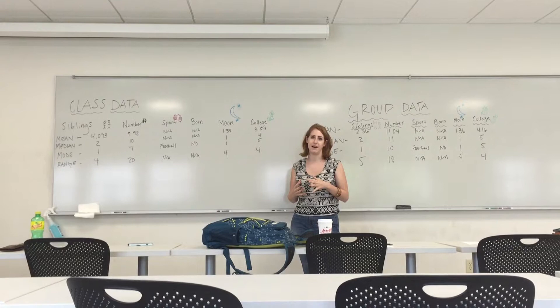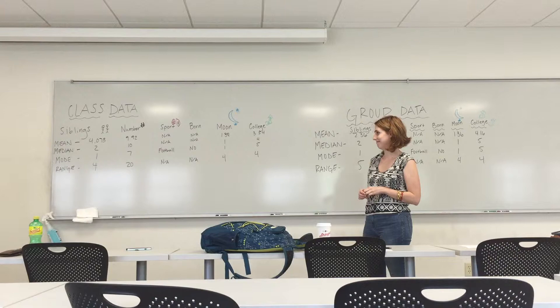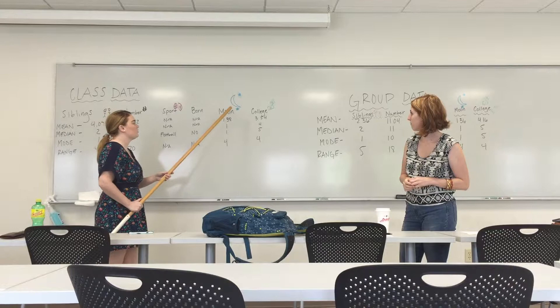So after we all did our surveys, we came together and we found some class-wide statistics and some group-wide statistics that we are going to compare and contrast. I was going to discuss the similarities between our class data. Did we land on the moon and should college be free compared to our group data for those last two questions?